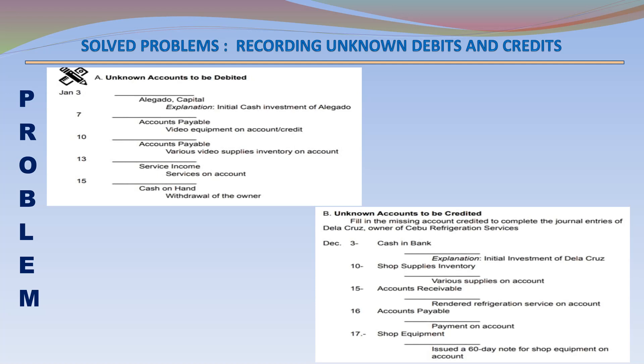Explanation – Initial investment of De La Cruz. December 10 – Shop Supplies Inventory Debit – Various supplies on account. December 15 – Accounts Receivable Debit – Rendered refrigeration services on account. December 16 – Accounts Payable Debit – Payment on account. December 17 – Shop Equipment Debit – Issued a 60-day note for shop equipment on account.